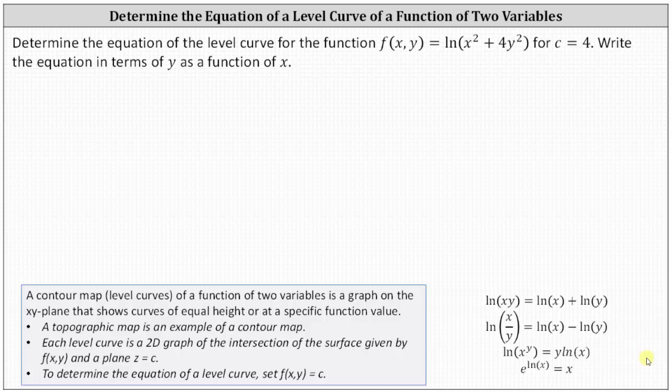Determine the equation of the level curve for the function f(x, y) = ln(x² + 4y²) for c = 4. Write the equation in terms of y as a function of x.